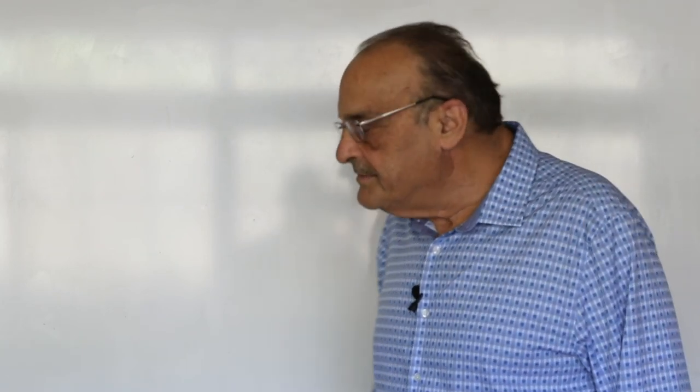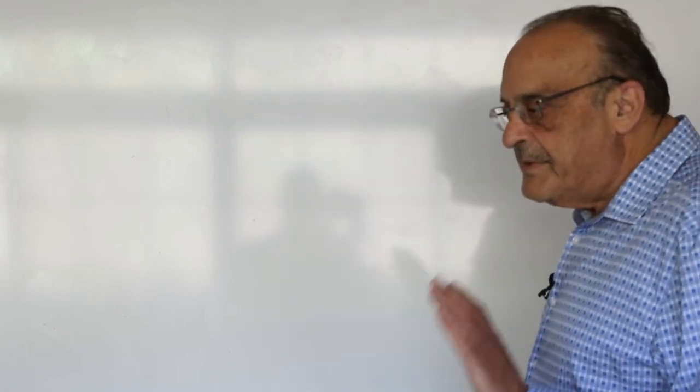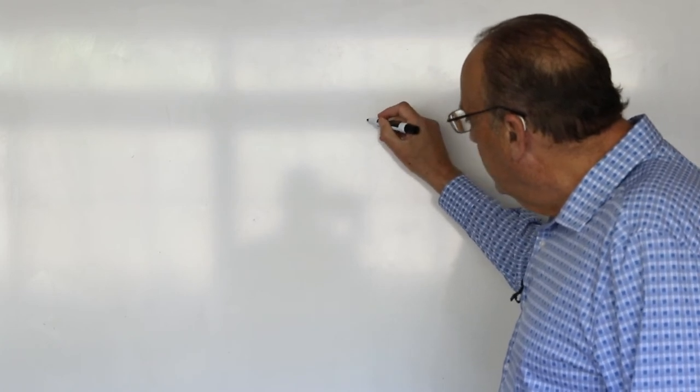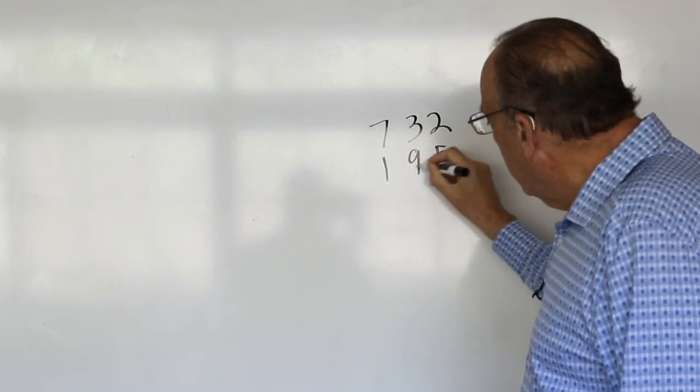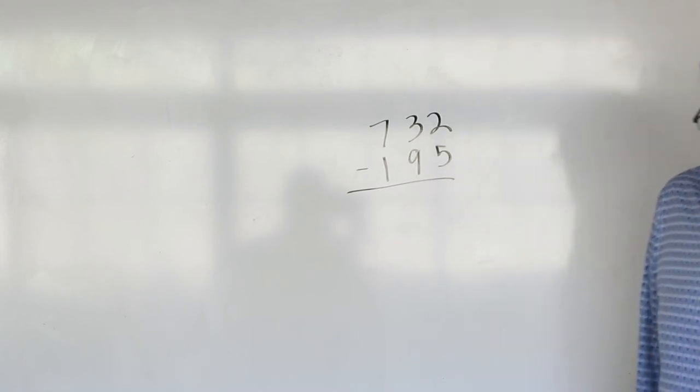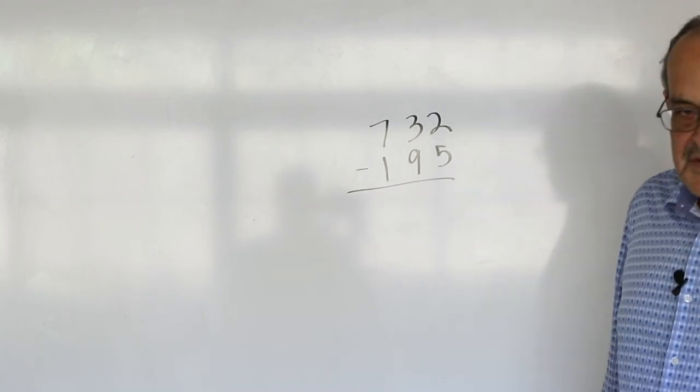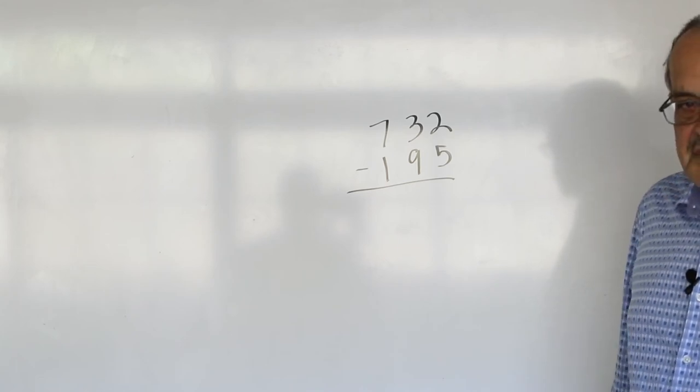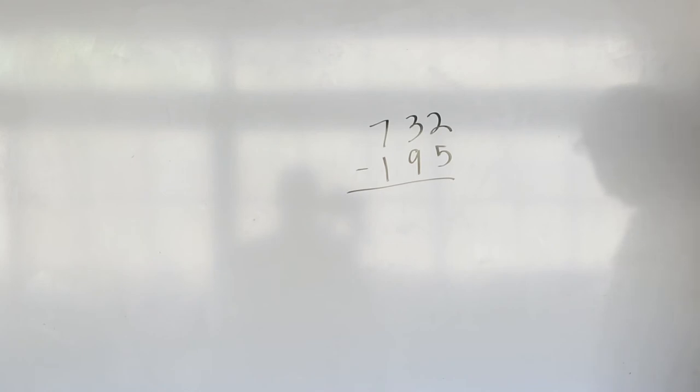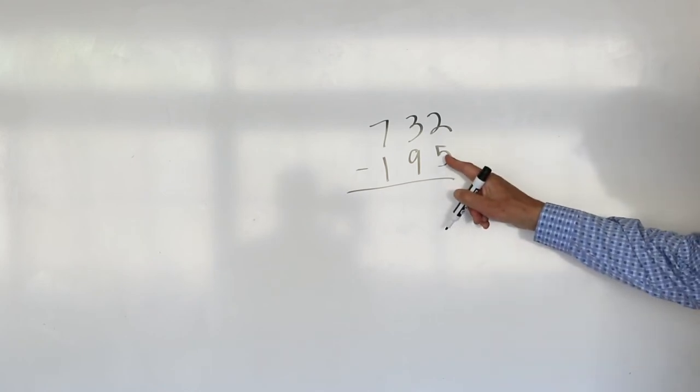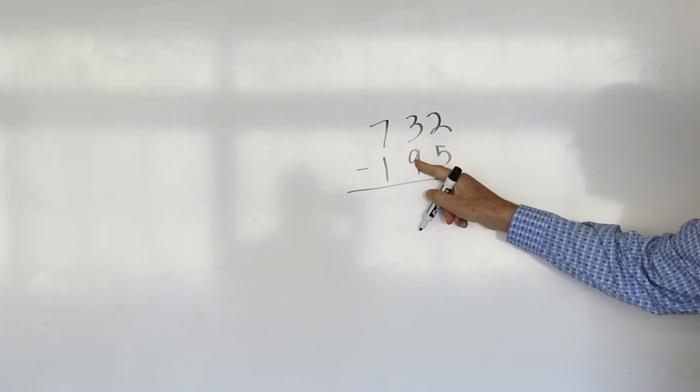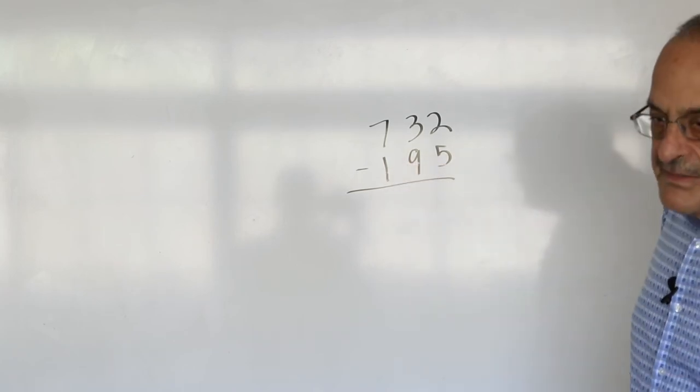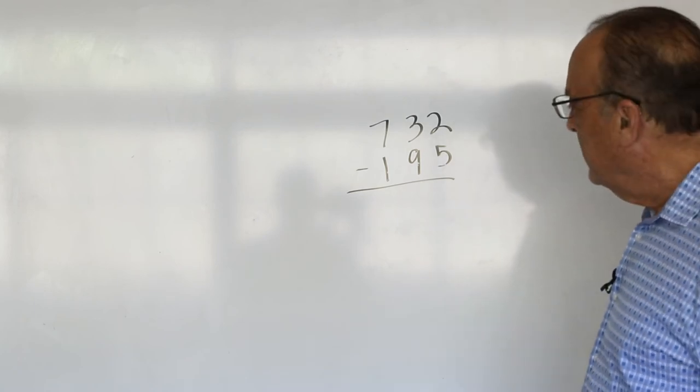So another thing I would like to explain is a method that I came up with myself called the bill collector method. So basically, I turn every subtraction problem into a money problem. So, for example, if we have, say, 732, take away 195, I say, there's this bill collector. And if I'm talking to a boy, I usually say it's a male bill collector. If I'm talking to a girl, I call it a female bill collector. And I say, this bill collector is very funny, I'll say it's a he. He likes his ones first, and then his tens, and then his hundreds. When you pay him, he wants five single dollar bills, then nine $10 bills, and then one $100 bill. And he insists on getting them in that order. So I'm basically turning every subtraction problem into a money problem.